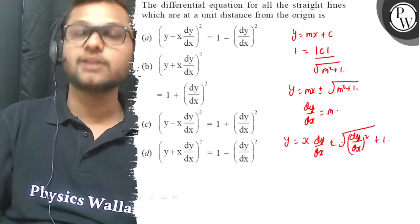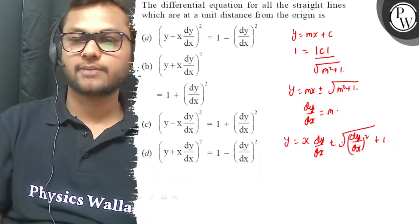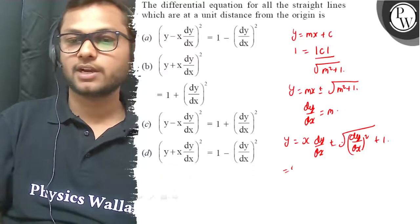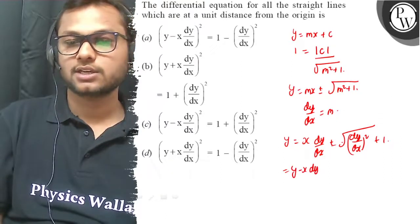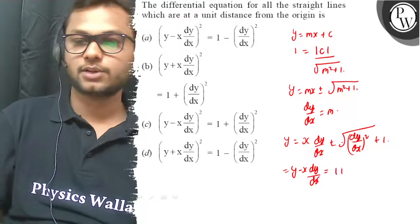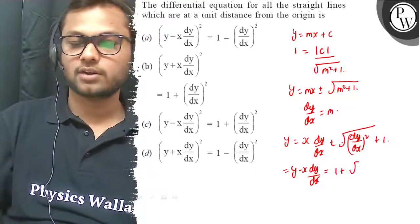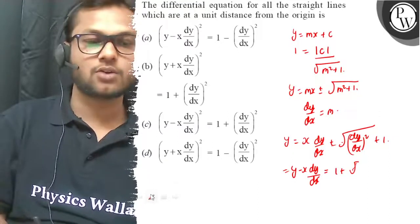So dy by dx whole square plus 1. This can be written in this way: So it becomes y minus x dy by dx is equals to plus minus square root of 1 plus dy by dx whole square.